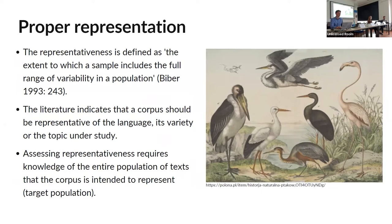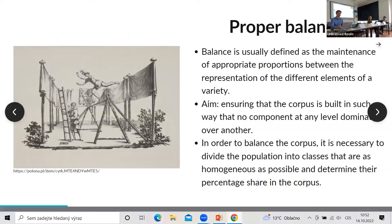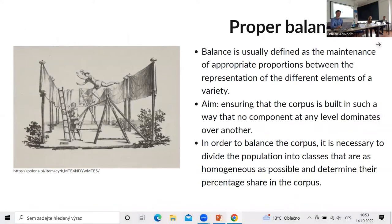The design principles are representativeness and balance. Representativeness is defined as the extent to which a sample includes the full range of variability in a population. Here we have two problems: first, we have to be aware of the population and all of the elements included in it to represent all of them. The second is balance, usually defined as the maintenance of appropriate proportions between the representation of different elements of a variety — basically, we should aim for a situation where no component at any level dominates over another.